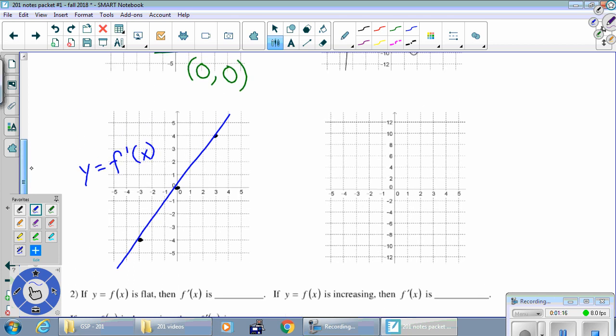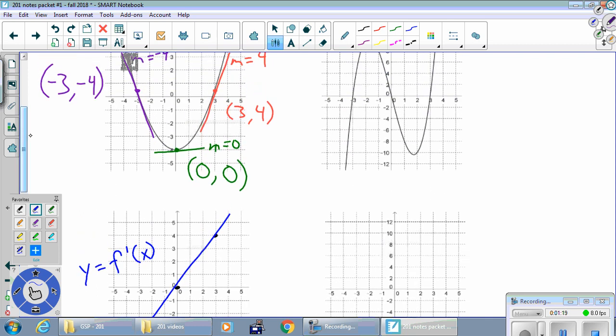If you want more accuracy than that, plot more points. I only picked three, but you could pick another one at negative 2 and at negative 1 and at negative 4, as many points as you want.